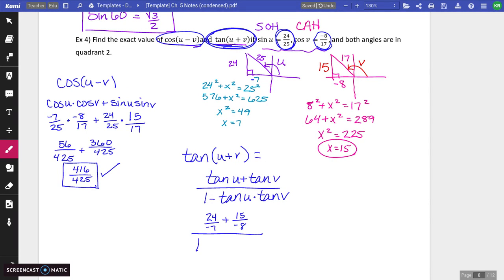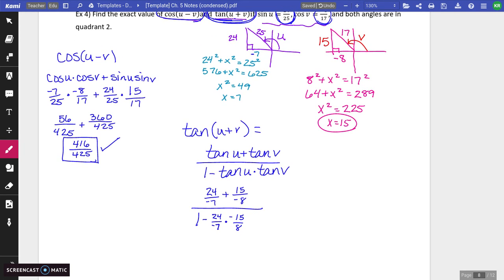And then 1 minus tangent of U, which is the 24 over negative 7 times tangent of V, the negative 15 eighths. Okay, so now we've got a good bit of fraction work for us. Okay, I'm going to get common denominators. So this one needs 8 over 8. This one needs 7 over 7.